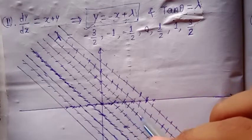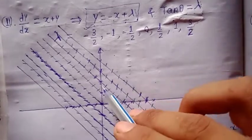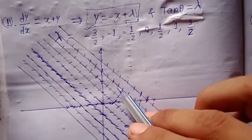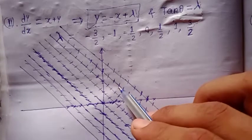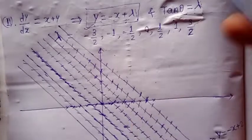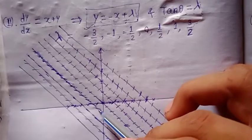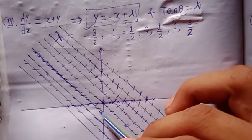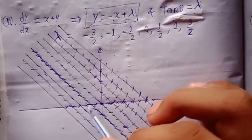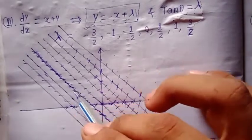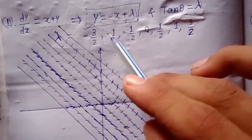Similarly, for lambda equal to 3/2, the isocline is again a line parallel to the previous ones, and the line segments will make an angle of tan inverse of 3/2, which is approximately 63.2 degrees. For lambda equal to minus 1/2, the line segments will make an angle of 26.5 degrees with the negative x-axis, and each line segment will be parallel to each other.